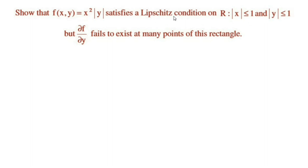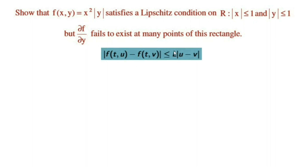A function f(x, y) satisfies a Lipschitz condition in the rectangle region R if there is a positive real number L such that |f(t, u) - f(t, v)| ≤ L · |u - v| for all (t, u) and (t, v) belonging to the rectangle region.